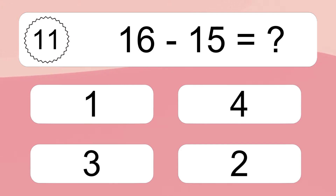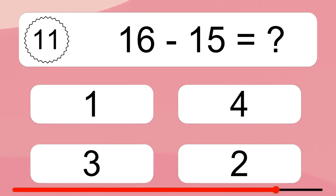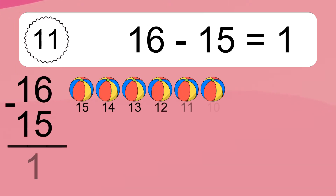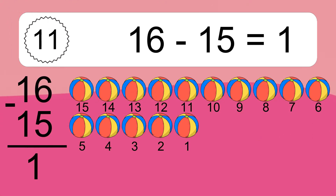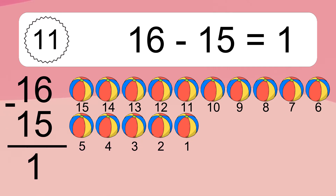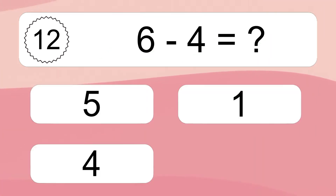16 minus 15 equals what? 16 minus 15 equals 1. Let's count it: 15, 14, 13, 12, 11, 10, 9, 8, 7, 6, 5, 4, 3, 2, 1.